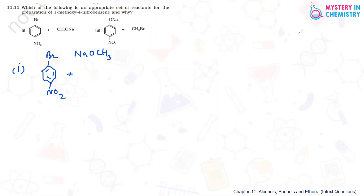So in this case, the reaction is between these two and sodium bromide is coming out of this reaction. By this, the product which is formed is the given product, that is 1-methoxy, OCH3, 4-nitrobenzene.